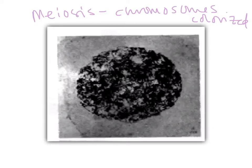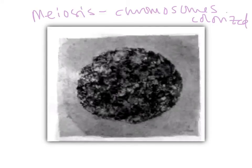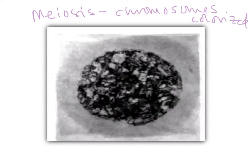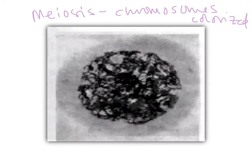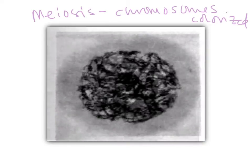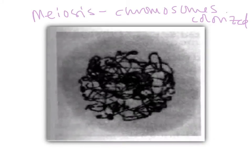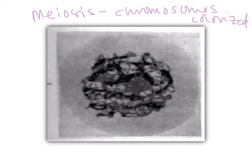And here we have meiosis. The chromosomes are actually colorized — they're not fake chromosomes, they just inked over them in Photoshop so they're easier to see. We can see chromosomes condensing. Remember, this is meiosis — right now it's 2N equals whatever. See them? They're getting to be sausage-shaped.